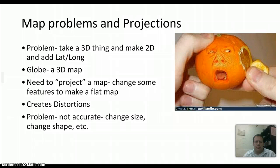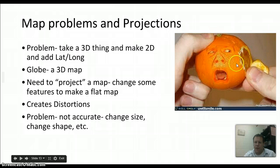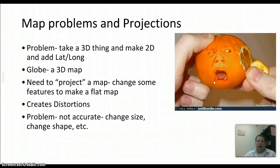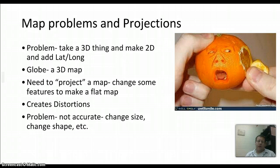There is a problem with maps though. You're trying to take a 3D thing — the Earth is a sphere — and make it into a flat 2D image. It's like peeling an orange; you can't perfectly flatten that orange peel. Something has to change. A globe is essentially a 3D map, but to make a true flat map you have to distort things. You have to change either the size or the shape of things, and that's what projections do — they project this 3D image onto a 2D surface.